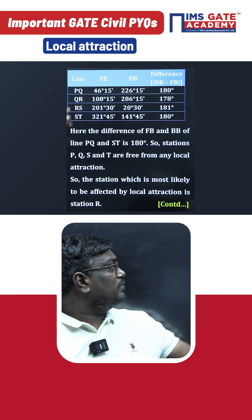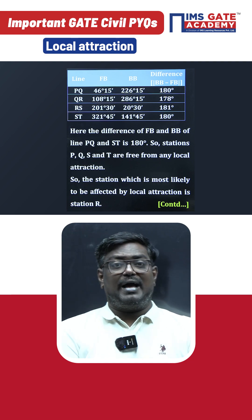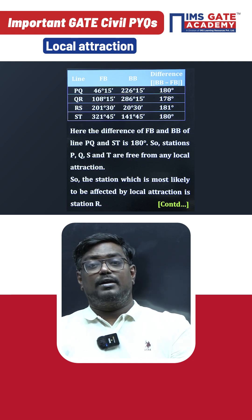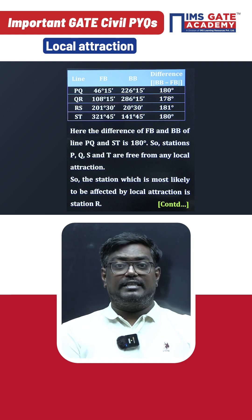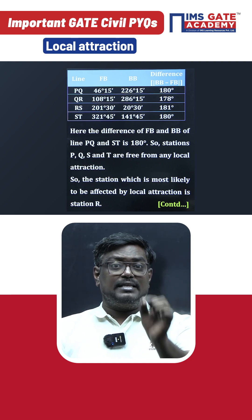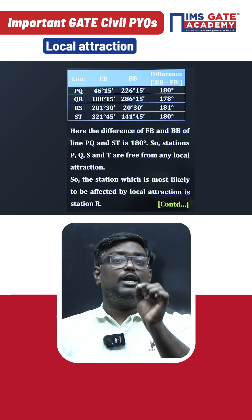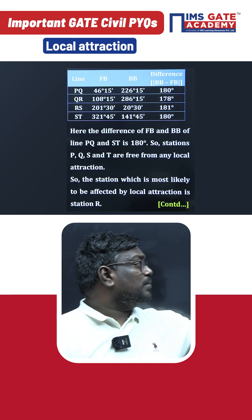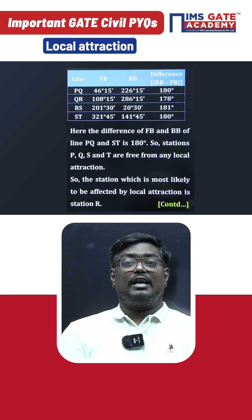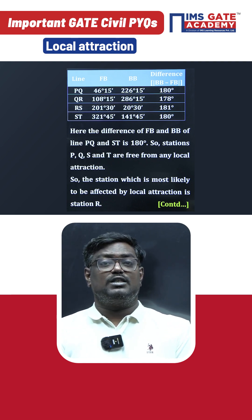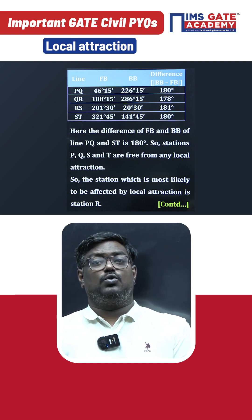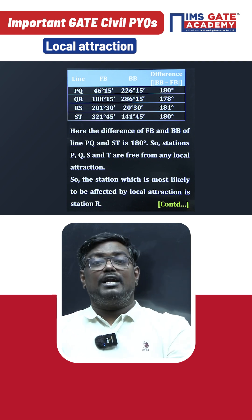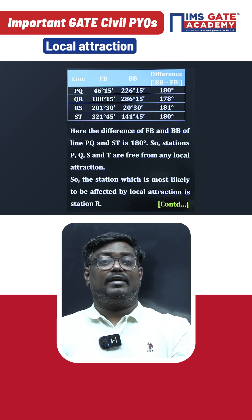In this question, we found out the back bearing of PQ minus fore bearing of PQ, and we got 180°. That means stations P and Q are not affected. When I talk about QR, the back bearing minus fore bearing of QR gives 178°. That means Q and R stations are affected.